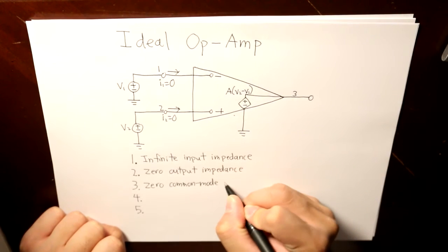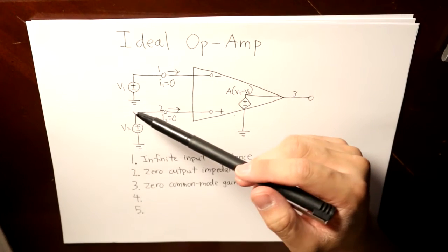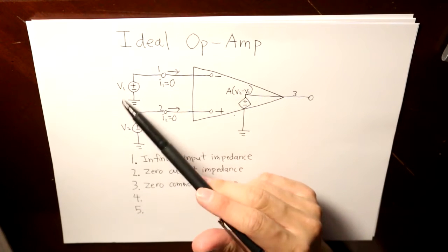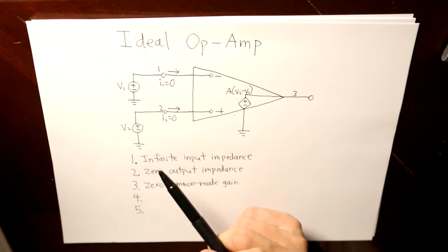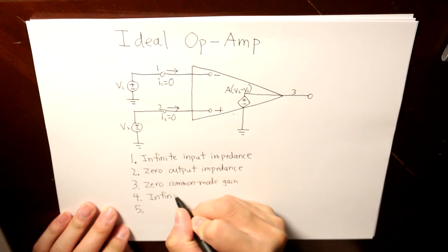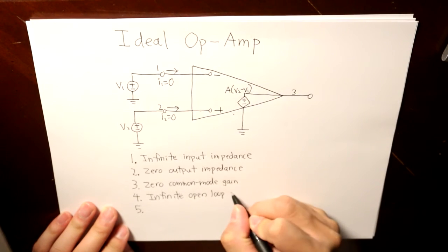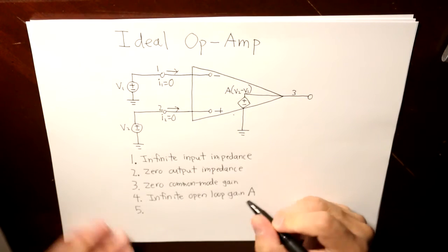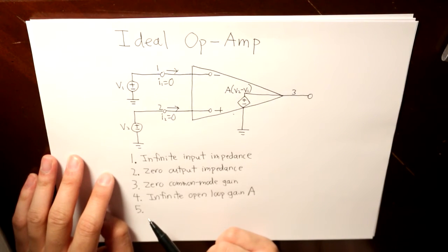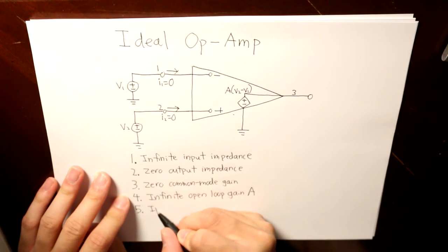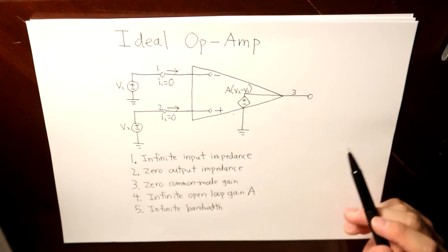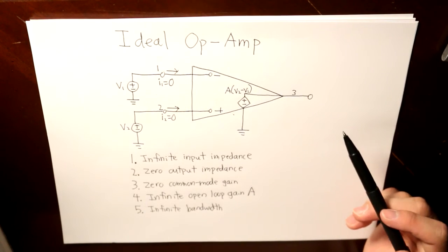Number three, it has zero common mode gain. Basically, the gain between V2 and V1 are the same, so their difference is essentially zero. Number four, infinite open loop gain A — this value A is infinite. And last but not least, the ideal op amp has infinite bandwidth, which can range from zero to infinity.